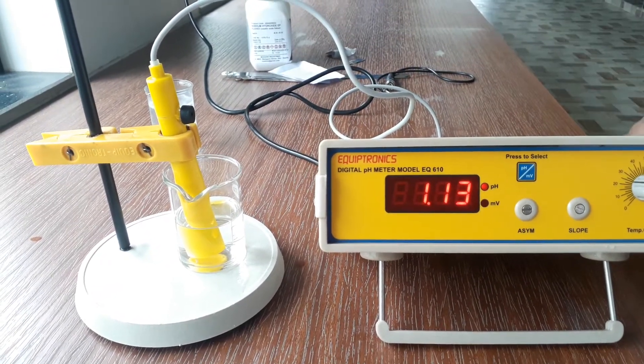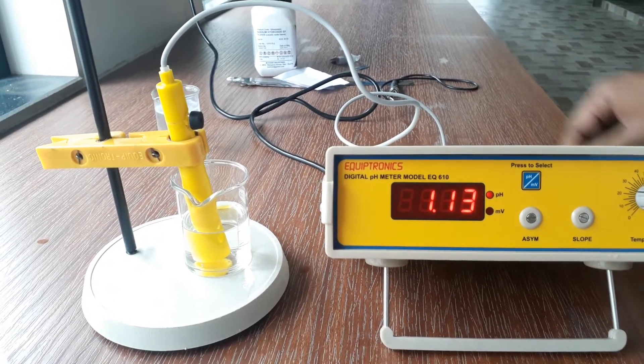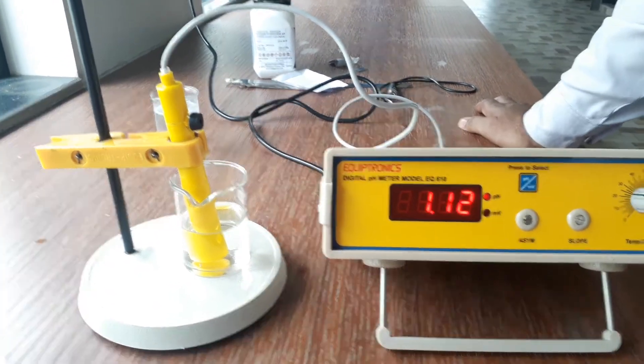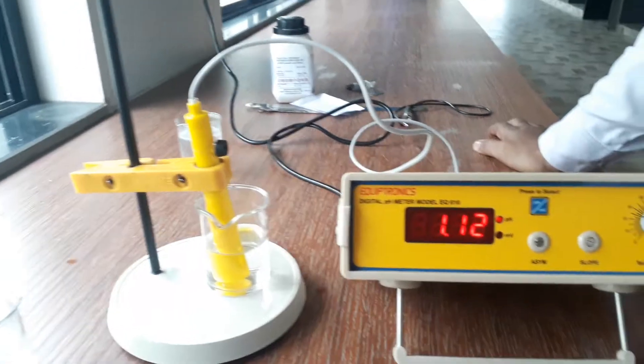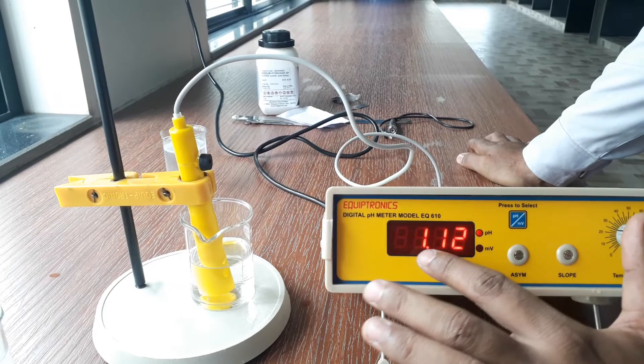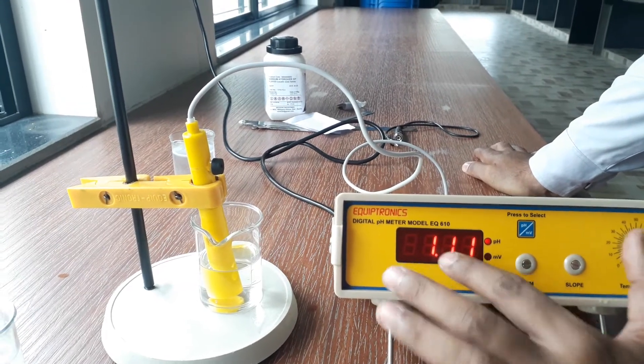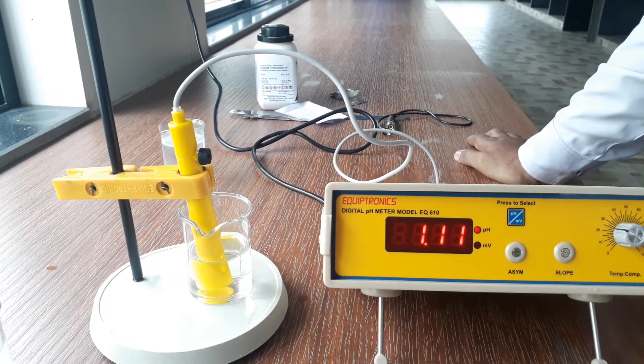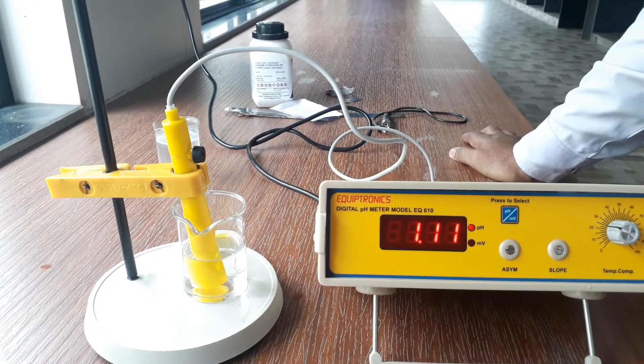But as we know the solution is HCl and we also know the range of HCl pH, that is from 1 to 2 according to its normality. Different pHs are there but it is nearly 1 to 2. So you can see that the pH value is also matching, that is 1.12 which is the pH value of hydrogen chloride, that is HCl.